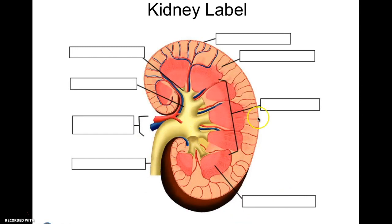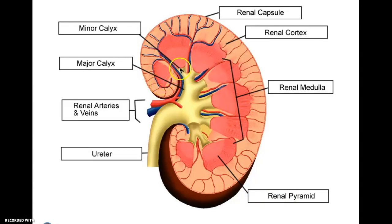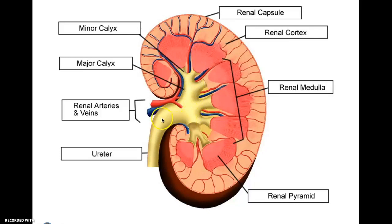Looking at the kidney, you have the renal capsule on the outside. The most superficial portion is the renal cortex, where all your nephrons would be. The renal medulla contains your renal pyramids, where a lot of the blood is. You have your minor calyx and major calyx. You have arteries and veins and your ureter, which leads to the bladder. Once the fluid is in the calyx, that would be what was filtered from the blood — essentially urine.